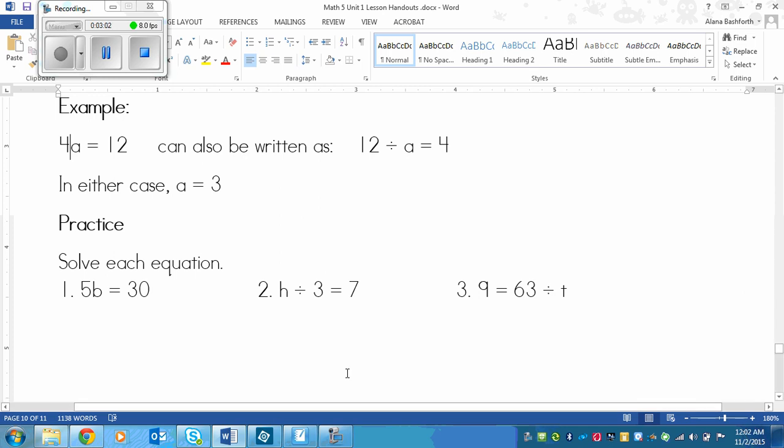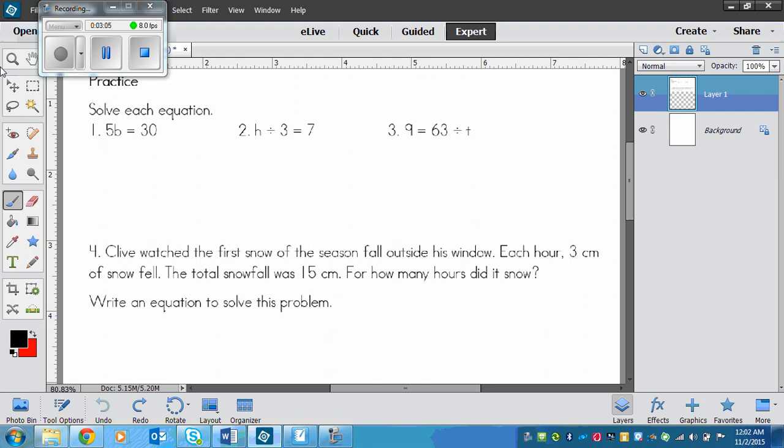If you aren't quite sure, we'll do the first one or two together and then you'll try. This is the first one: 5 times b equals 30. We need to think of a number that b could be to make 5 times something equal 30. We need to think of our 5 times tables. We could skip count by 5s until we get to 30. So we could go 5, 10, 15, 20, 25, 30.